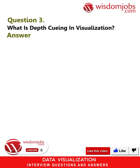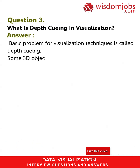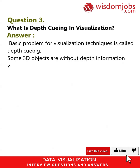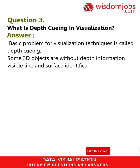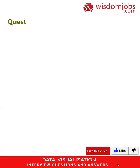Question 3: What is depth queuing in visualization? Answer: The basic problem for visualization techniques is called depth queuing. Some 3D objects are without depth information. Techniques include visible line and surface identification, highlighting visible lines, displaying visible lines as dashed lines, and removing invisible lines.